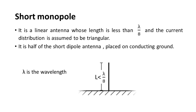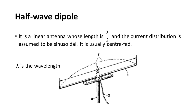The third one is the short monopole. It is a linear antenna whose length is less than lambda by 8, and the current distribution is assumed to be triangular. It is half of the short dipole antenna placed on a conducting ground.